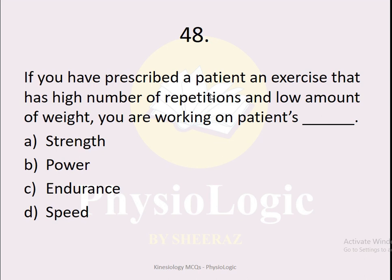MCQ number 48: If you have prescribed a patient an exercise with a high number of repetitions and a low amount of weight, you are working on the patient's — option A strength, option B power, option C endurance, option D speed. The correct option is endurance. When the exercise has a high number of repetitions with low weight, you are targeting the endurance of the muscle.